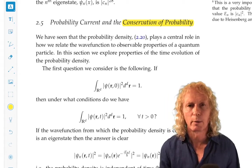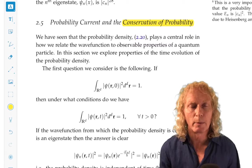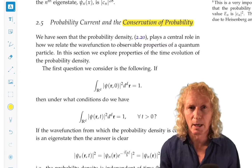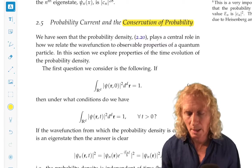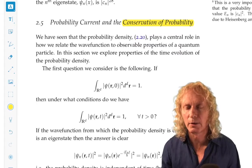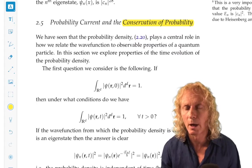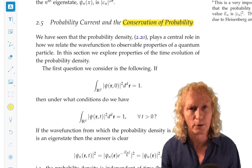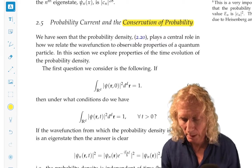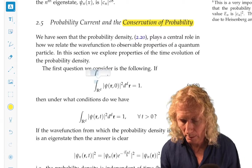Conservation of probability is going to mean that the probability does not change in time. And probability current is going to be something that we derive in the course of understanding conservation of probability.